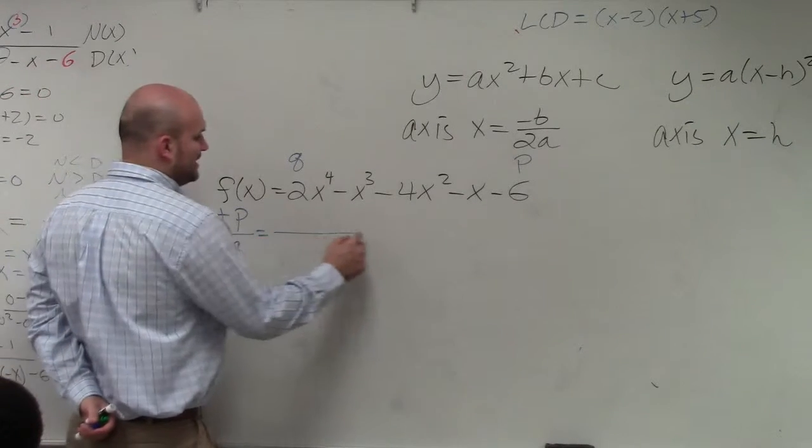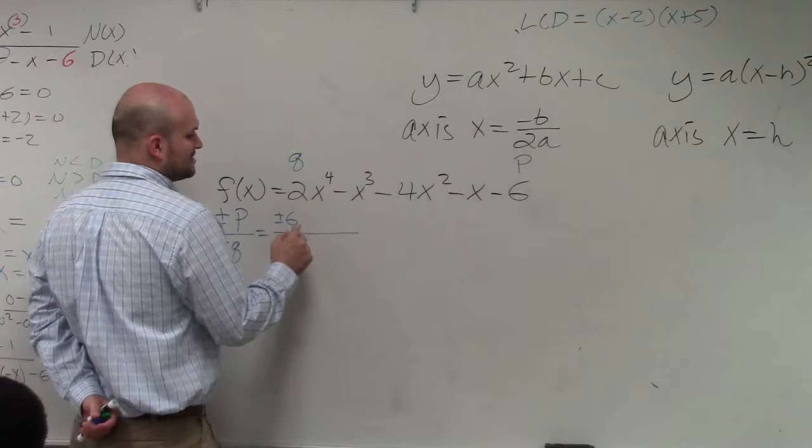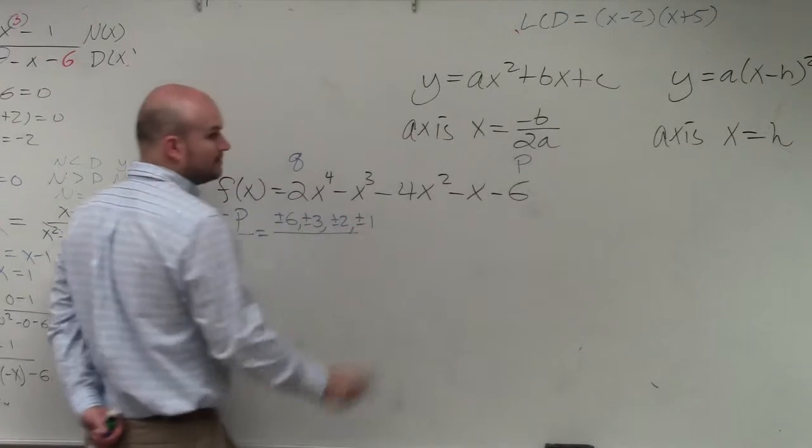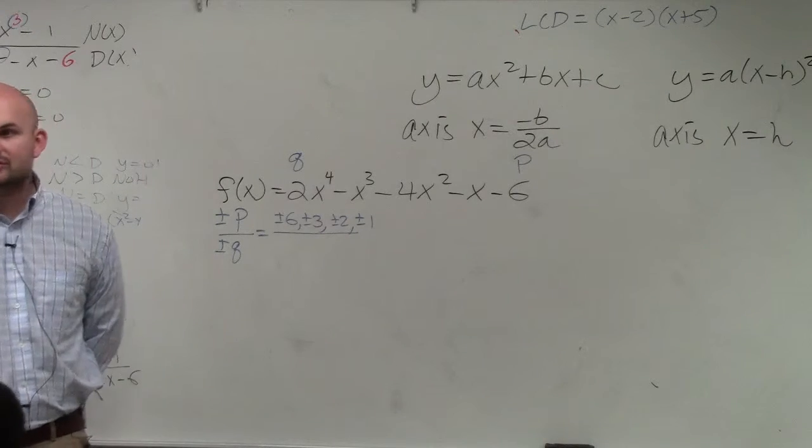So the factors of p are plus or minus 6, plus or minus 3, plus or minus 2, plus or minus 1. Does everybody understand that?